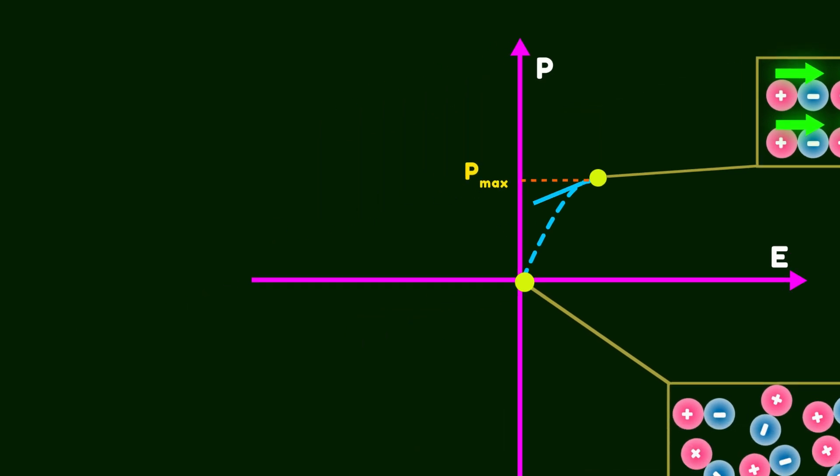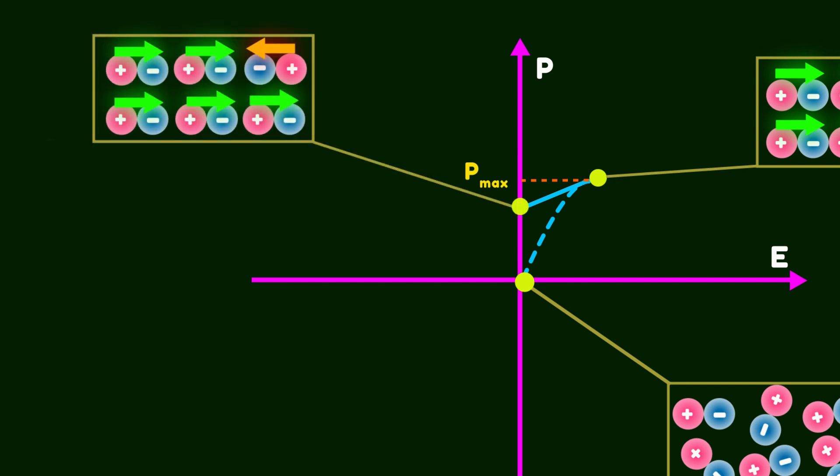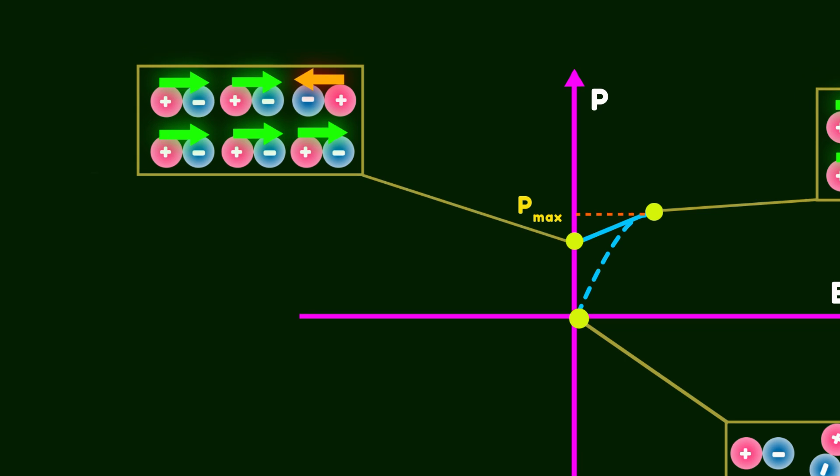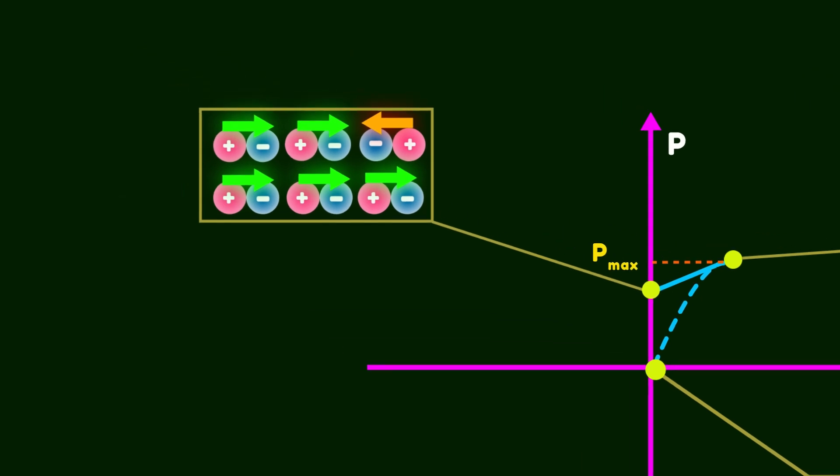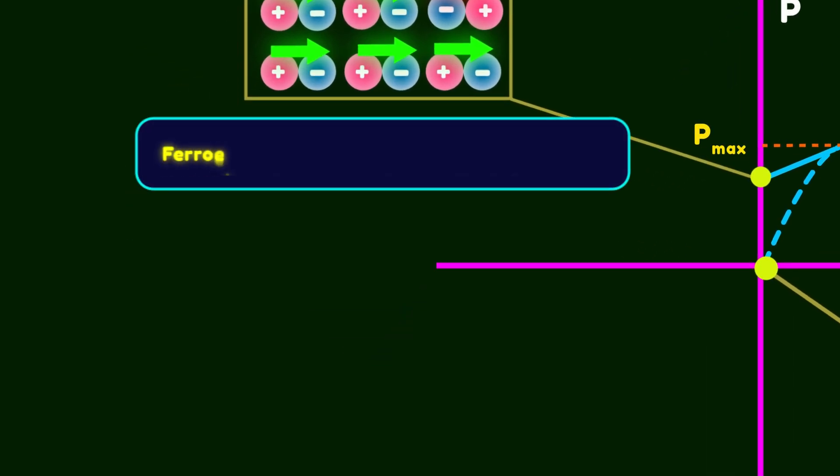Next, let's reduce the electric field back to zero. At first glance, we might expect the polarization to drop to zero as well. But in reality, the compound remains polarized, even when the external field is zero. This is the most important feature of ferroelectric materials. It means that most of the dipoles stay aligned with the previously applied field. In other words, ferroelectrics seem to have a kind of memory. This property is known as the hysteresis effect.